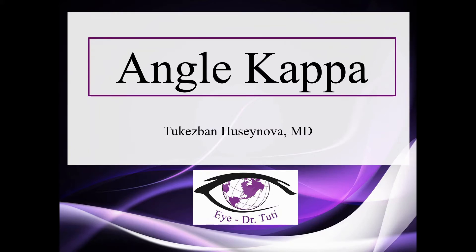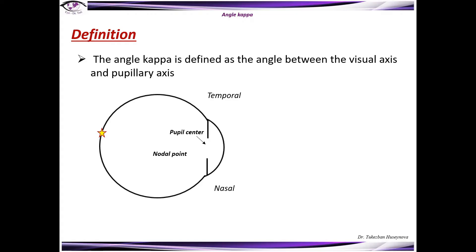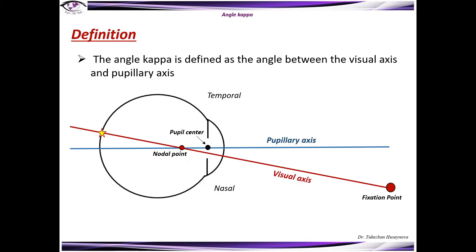Hi, welcome back to my next video. Today I'm going to be talking about angle kappa. The angle kappa is defined as the angle between the visual axis and the pupillary axis.